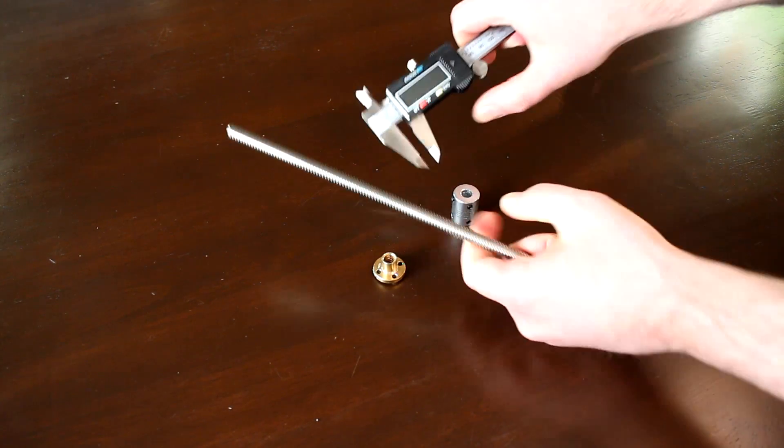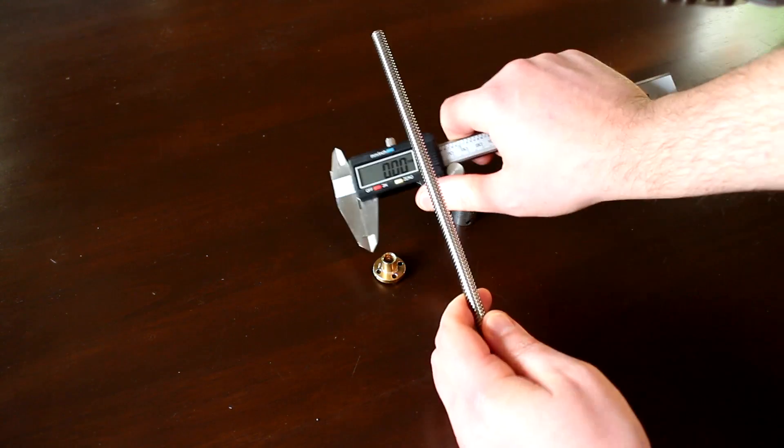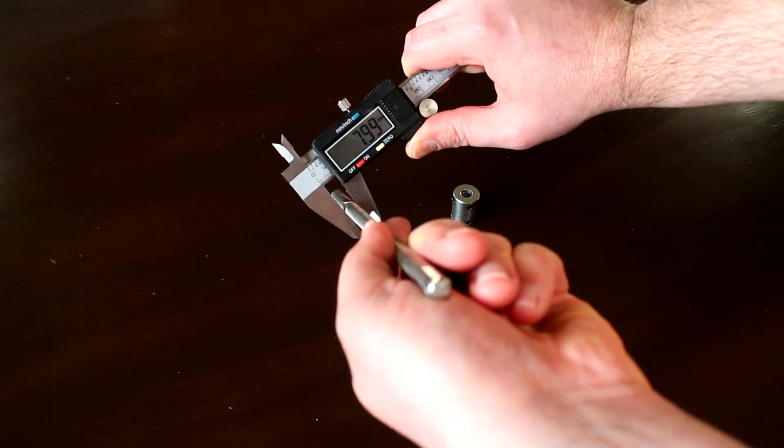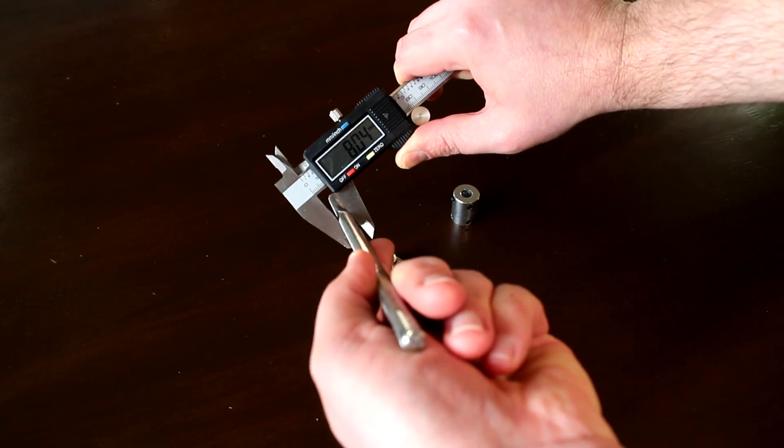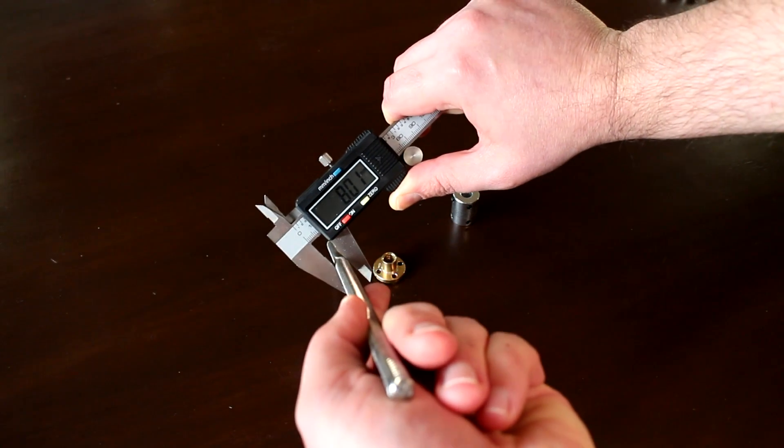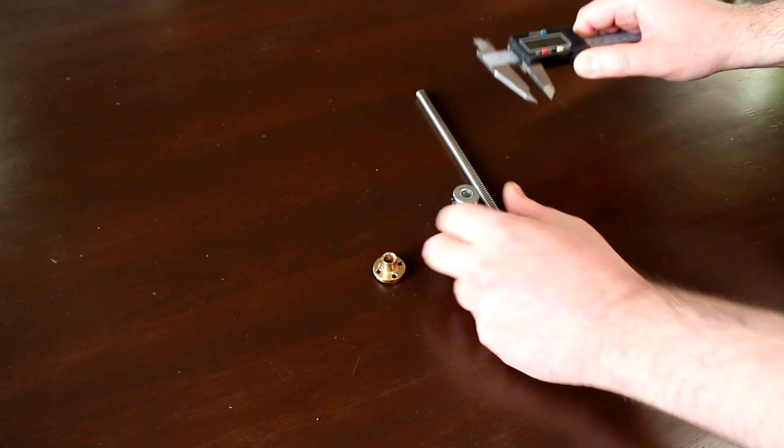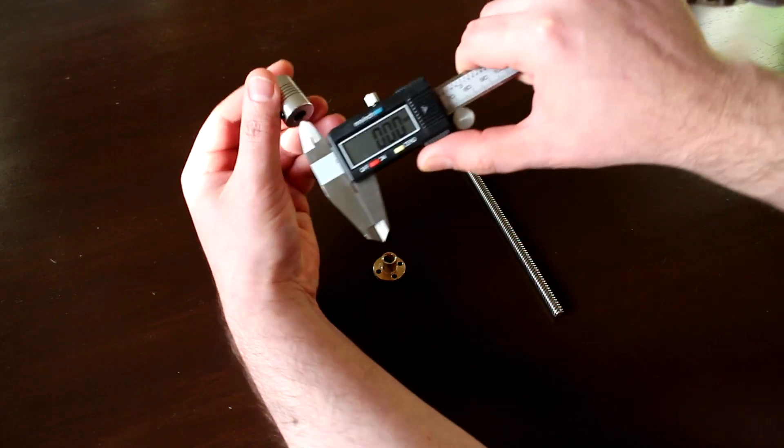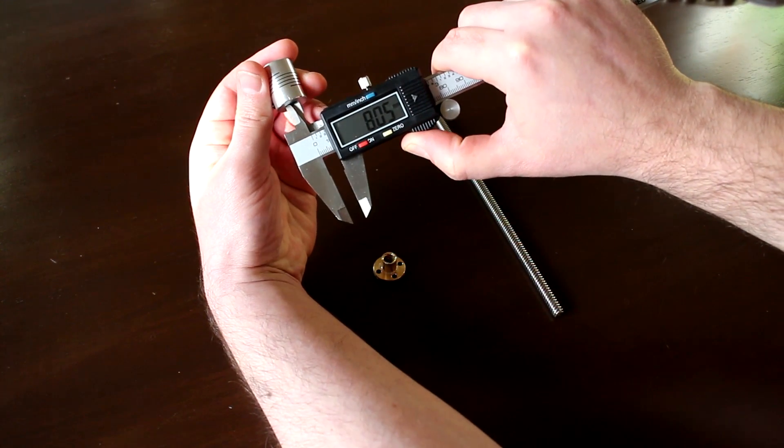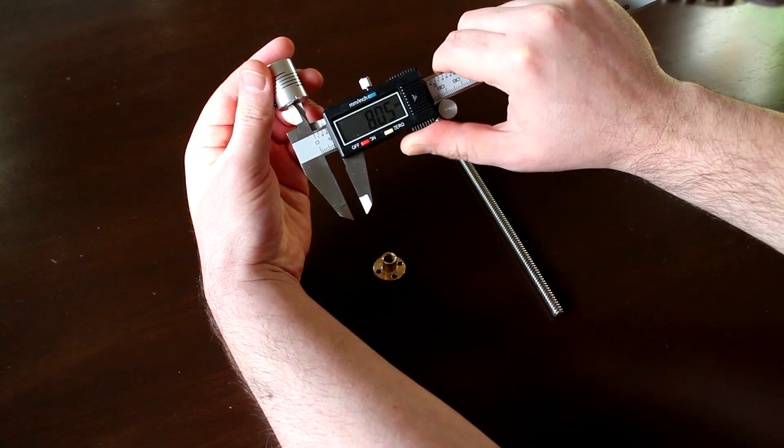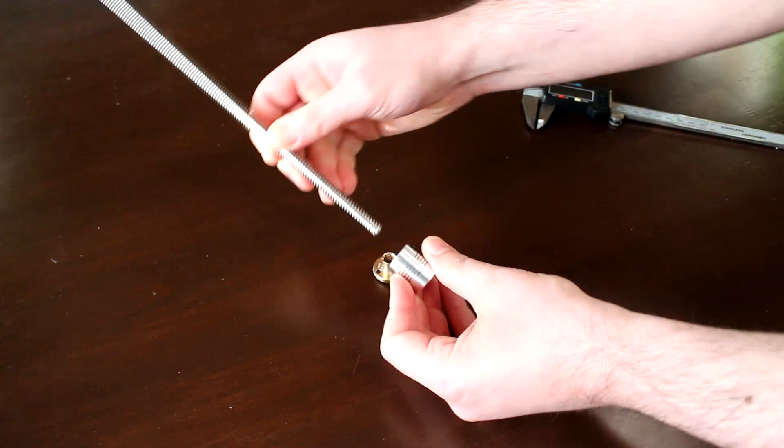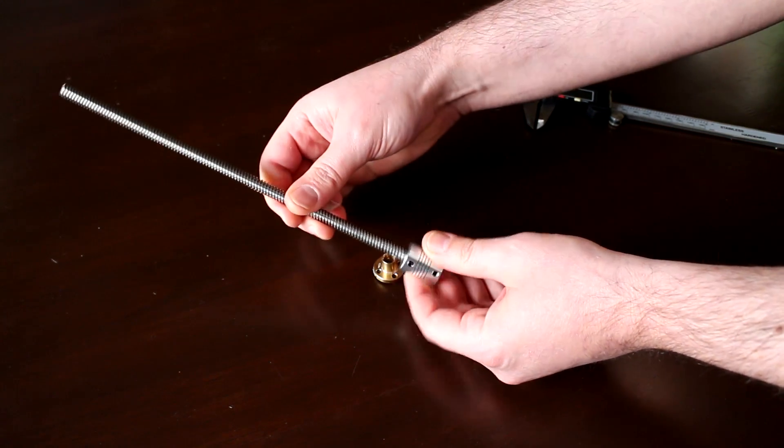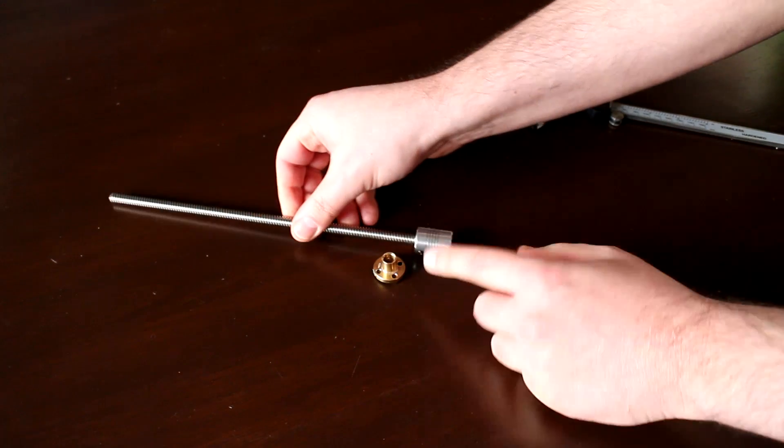I have my trusty digital calipers here, set them to zero. If I measure the diameter of the lead screw, look at that, it's pretty much bang on eight millimeters. And if I look at the diameter of the shaft coupler itself, again we're looking at pretty much eight millimeters on the nose. So there's not going to be any issues with having a non-centered shaft like you do with the M5. That's going to be perfectly centered and as it spins it's not going to wobble around. I'm happy with this combination.